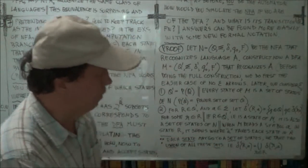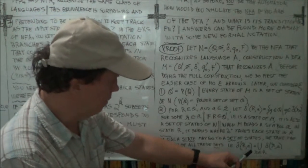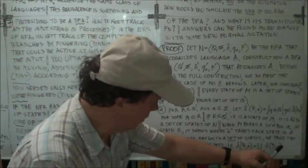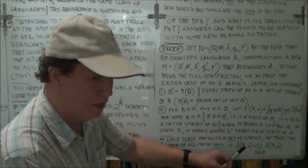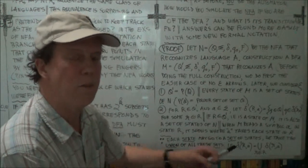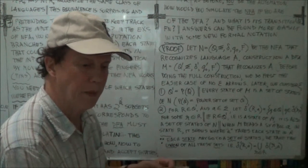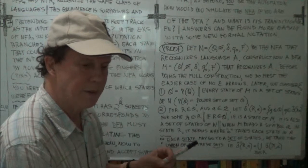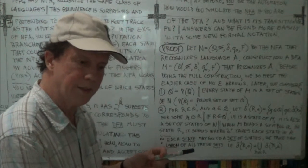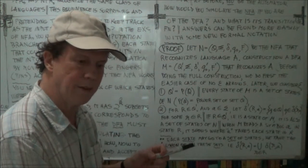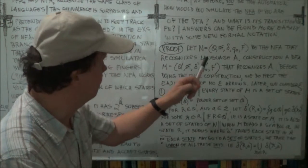So you calculate the next state for each member of your subset of the DFA. This gives you a set, and you take the union of those sets — and that will be the next state of your DFA. Remember, the state of the DFA is a subset of the states of Q.